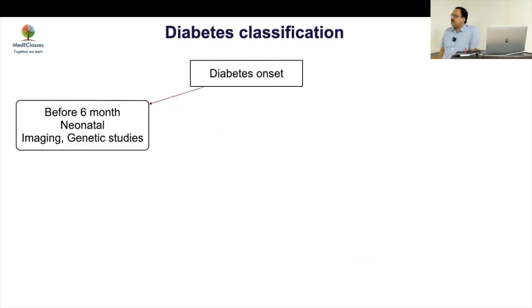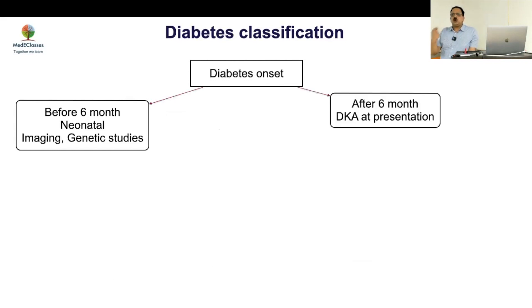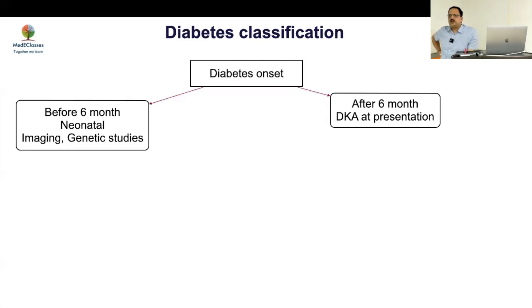We have six interesting cases covering the entire range of non-type 1 pediatric and adolescent diabetes. How do you classify? Onset less than six months — think neonatal, do imaging and genetic studies. If imaging is not clear, to know whether the pancreas is formed, fecal elastase is the best marker because even on CT the pancreas is sometimes not clearly visible.